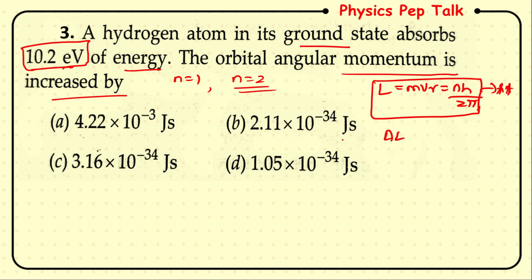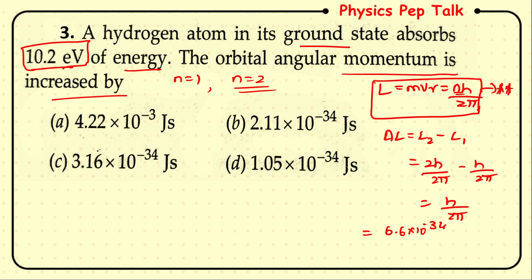The increase in angular momentum ΔL = L₂ − L₁ = (2h/2π) − (1h/2π) = h/2π. Substituting h = 6.6 × 10⁻³⁴ and dividing by 2π ≈ 3.14, we get approximately 1.05 × 10⁻³⁴ J·s. So option D is the correct answer.